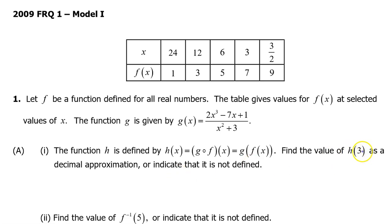Find the value of h at 3 as a decimal approximation or indicate that it is not defined. Well, h at 3 means plugging 3 in for x. So h at 3 is going to equal g at f at 3. Working from the inside out, let's see if we can determine f at 3. According to the table, f at 3 is 7. So this becomes g at 7.